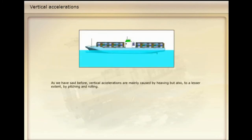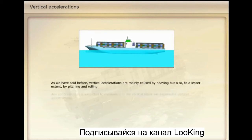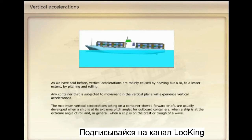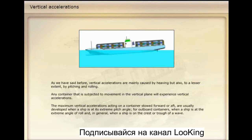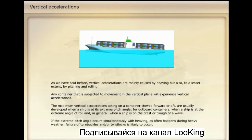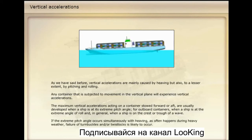Vertical accelerations are mainly caused by heaving, but also to a lesser extent by pitching and rolling. Any container subjected to movement in the vertical plane will experience vertical accelerations. The maximum vertical accelerations acting on a container stowed forward or aft are usually developed when a ship is at its extreme pitch angle, for outboard containers when a ship is at the extreme angle of roll, and in general when a ship is on the crest or trough of a wave. If the extreme pitch angle occurs simultaneously with heaving, as often happens during heavy weather, failure of turnbuckles and/or twist locks is likely to occur.